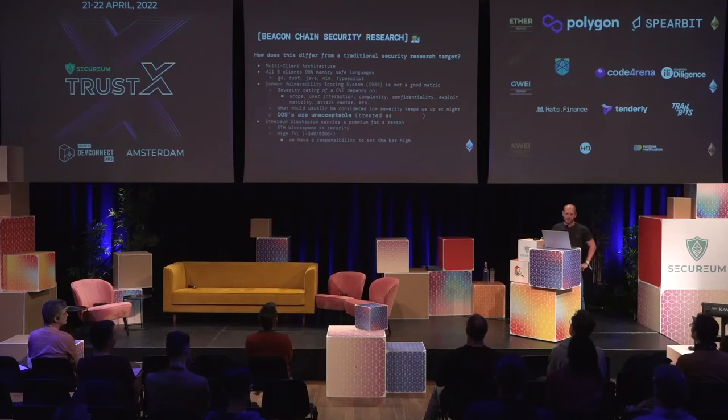Another interesting thing: all of our clients are memory-safe languages for the most part. We do have some shared dependencies like BLS that are native. We've gone through some formal verification for these types of things — we consider them critical and do manual code audits on that kind of stuff. What does this mean for the traditional security research world? It means we're much less likely to see memory corruption issues, much less likely to see remote code execution — stack and heap buffer overflows are not very common. At the same time, the bar is a lot higher for us. The traditional CVE vulnerability scoring system, the CVSS, is basically not good for us.